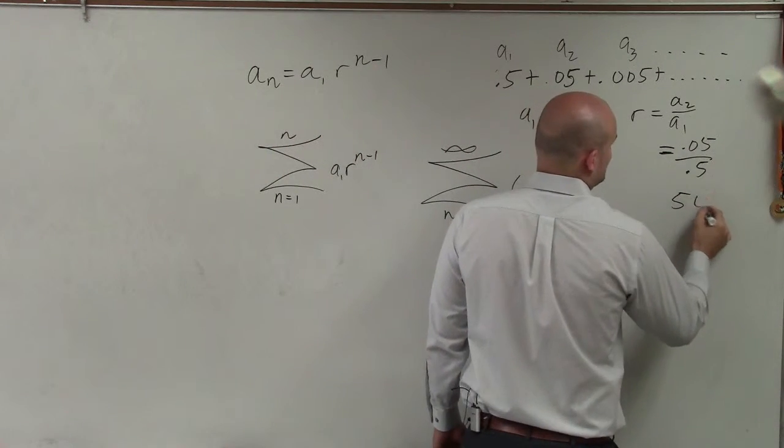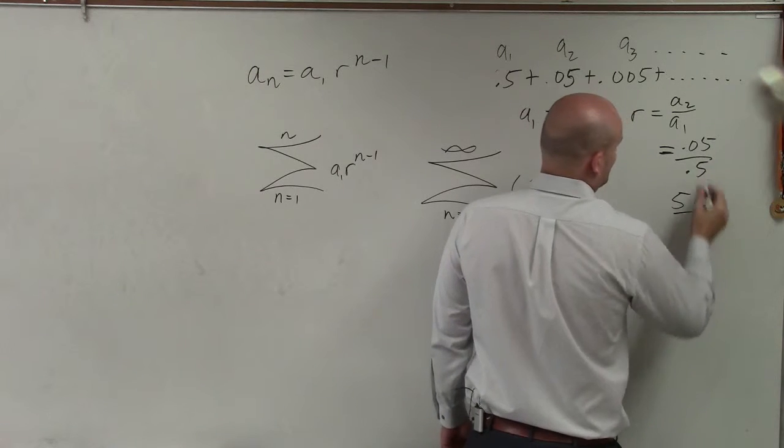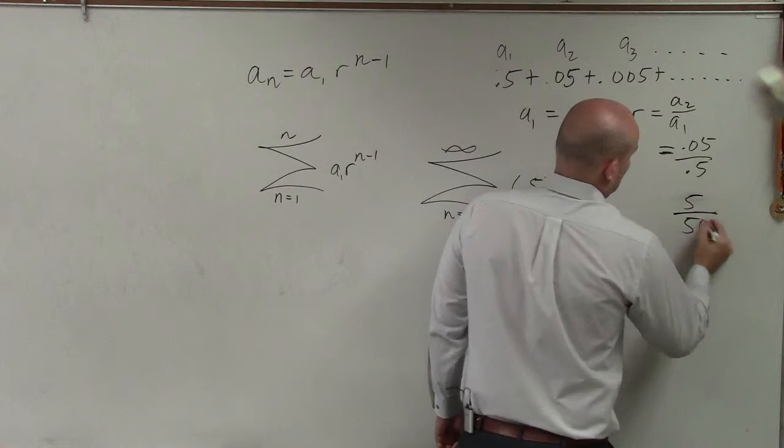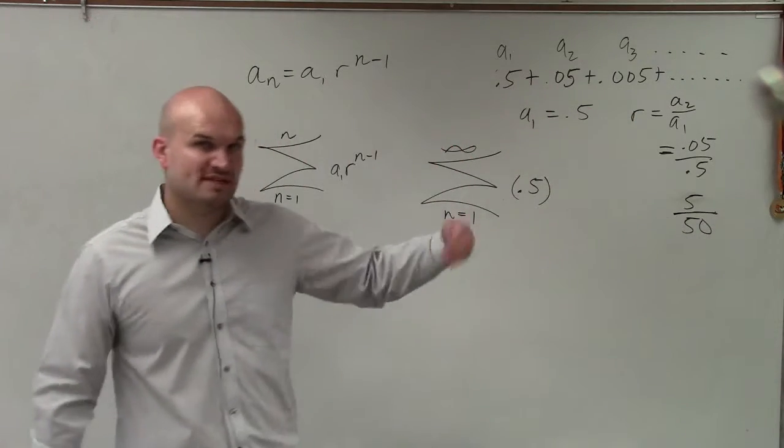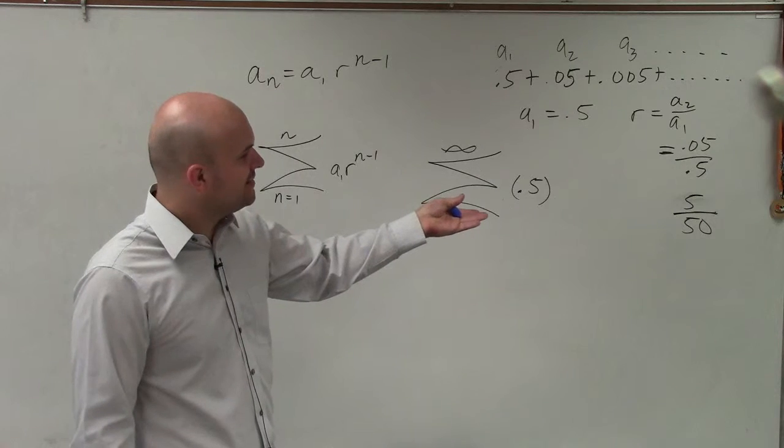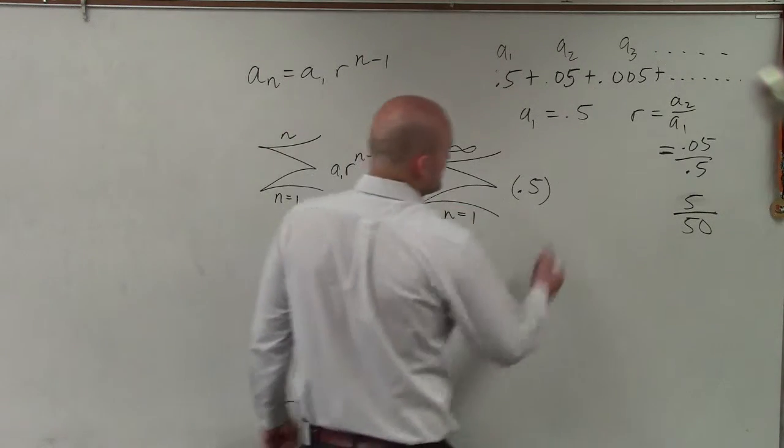So I can say that's 50... I'm sorry, 5 over 50, right? You just move the decimal point over on the top and bottom. And then 5 over 50, that's going to be 1/10.